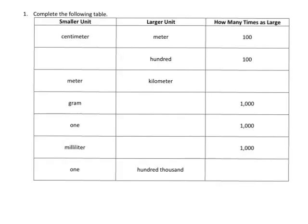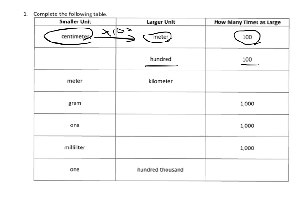So if we were to complete this table, you've got a smaller unit and the larger unit. And how are they connected? Well, you take the centimeters, you times by 100, and that gives you the meter. And that's why it's how many times as large? The answer is 100. So if 100 is the larger unit and it's 100 times larger than the smaller unit, that means this is your ones unit.